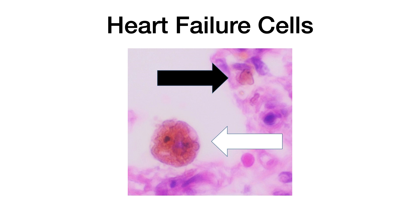When the macrophage eats the red blood cell, it takes on the appearance of hemosiderin because hemosiderin is in your red blood cells. So if you see this image — with the white arrow pointing to the heart failure cell — this is termed a heart failure cell, and it is suggestive of left-sided heart failure or heart failure in general.